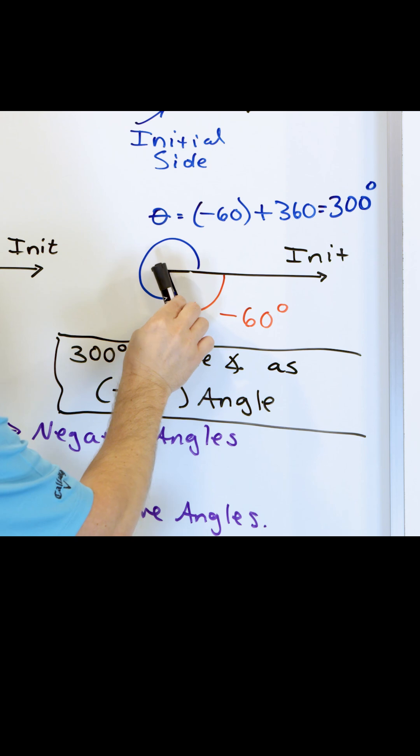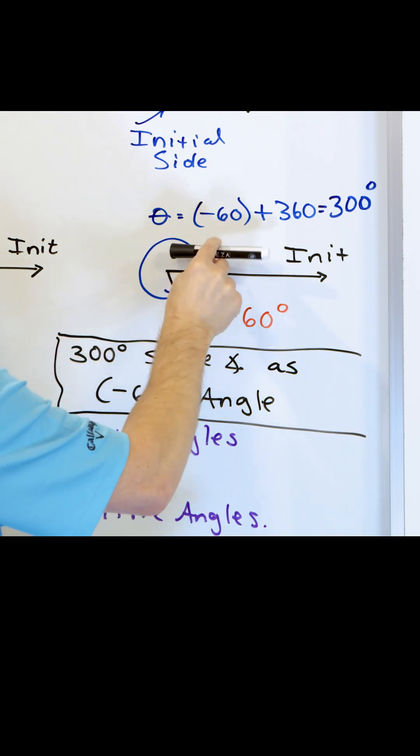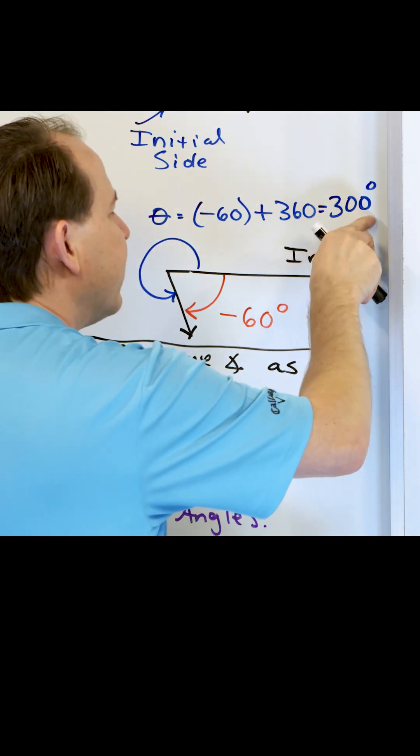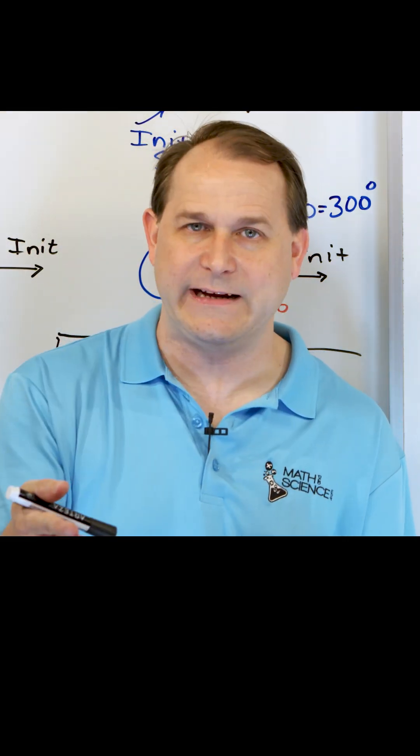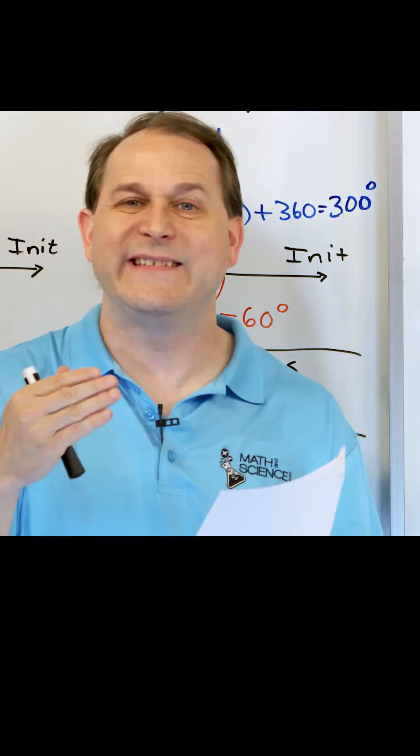What if I add 360 degrees again? I could add 360 degrees to the 300 degree angle. What am I going to get? 660 degrees. So 360 plus the 300 is 660.